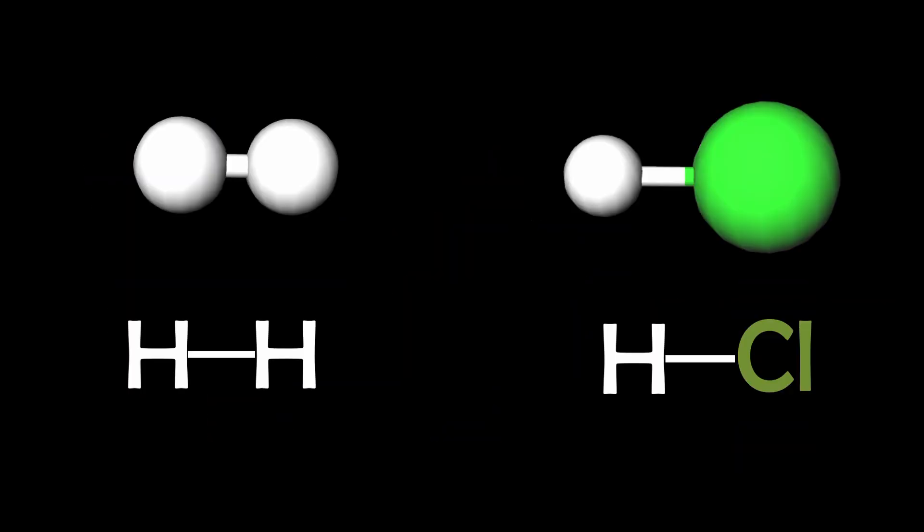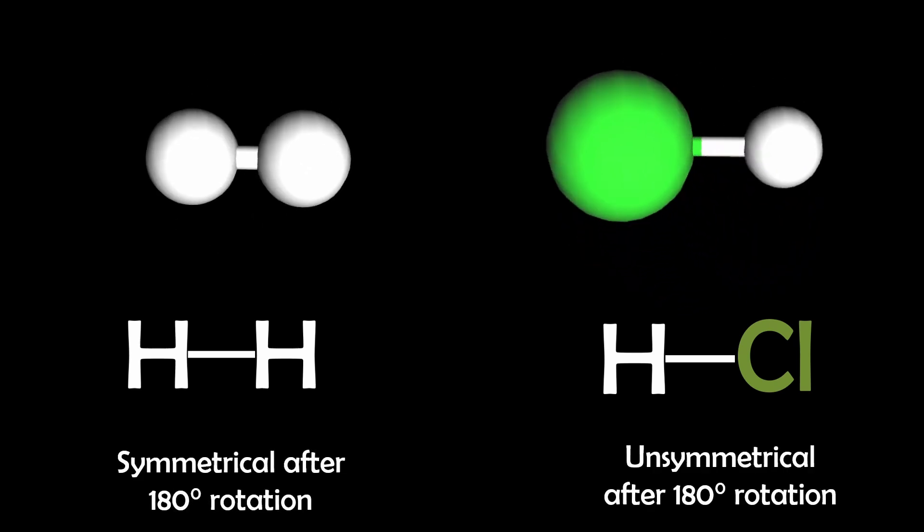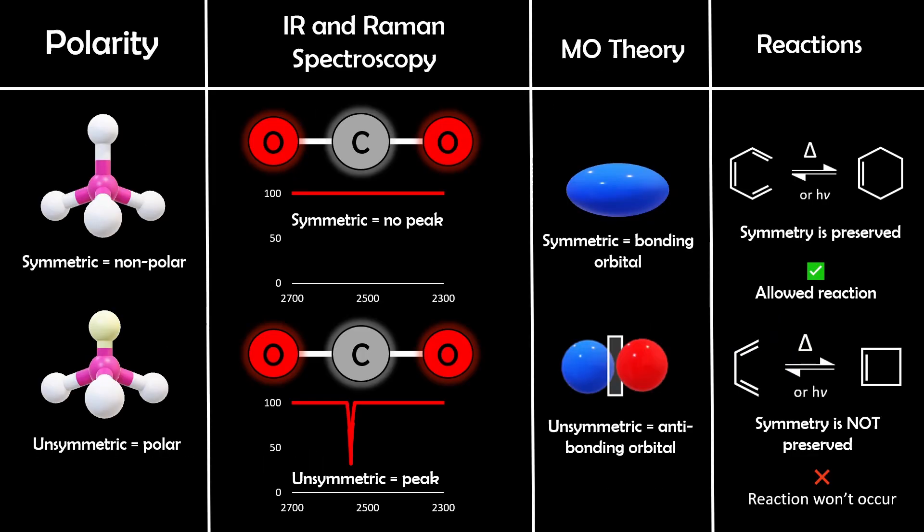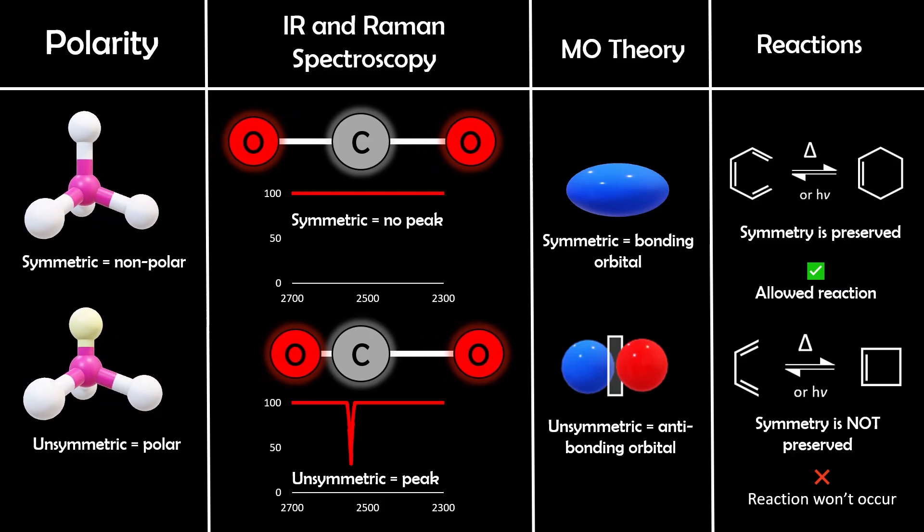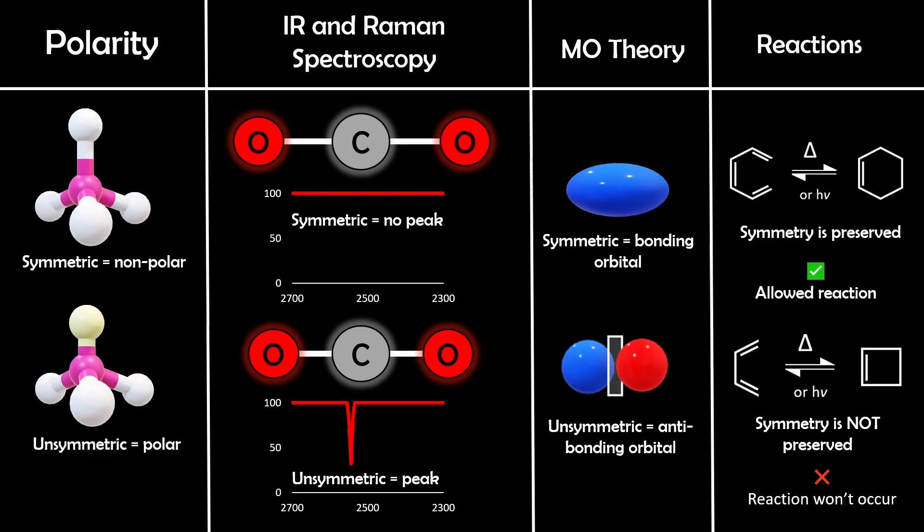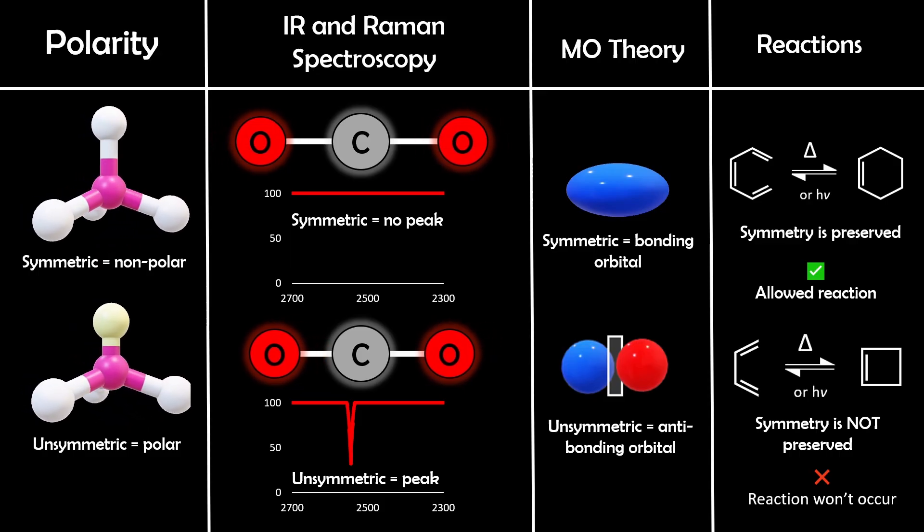For example, take two simple linear molecules, H2 and hydrochloric acid. They're both linear, but they aren't equally symmetrical. If you flip them end to end, H2 looks identical since both sides are hydrogen, while hydrochloric acid doesn't, because hydrogen and chlorine are different atoms. And that difference in symmetry is why H2 is nonpolar, while hydrochloric acid has a permanent dipole. So this simple idea already connects symmetry to molecular properties.